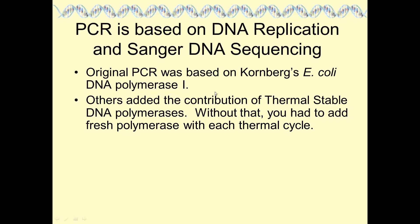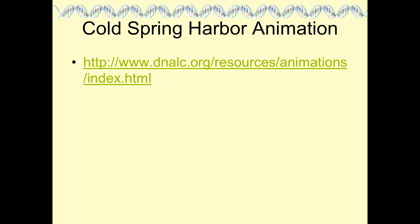The first polymerase used in PCR was the original Kornberg E. coli DNA Polymerase I, but since it came from E. coli it wasn't thermostable — every heating cycle killed it. Subsequently, thermostable polymerases were added, making PCR truly practical because you no longer had to add fresh polymerase at every cycle.